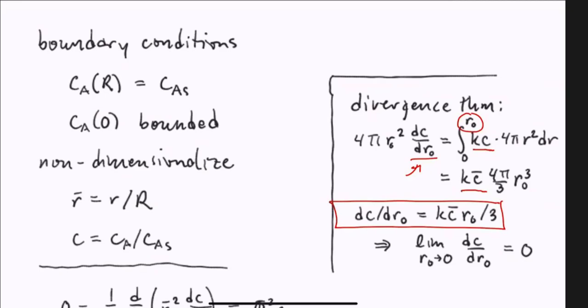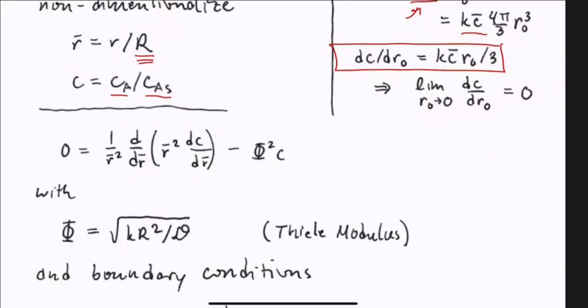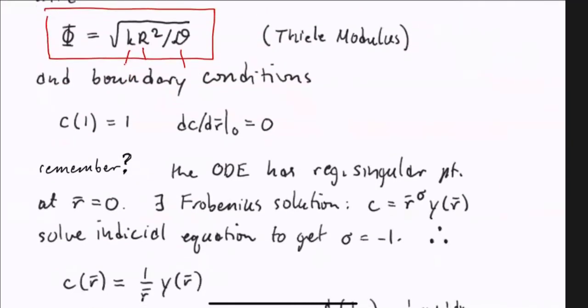Now we're going to non-dimensionalize these equations. R̄ equals the actual radius R divided by the radius of the pellet. We're also going to non-dimensionalize the concentration as CA divided by the surface concentration. After changing variables, we find a single dimensionless parameter called the Thiele modulus. Instead of having a rate constant and diffusivity, we just have the squared Thiele modulus. If you reverse engineer where that came from, it's K times R² over D. This lumps in all the geometry effects, intrinsic kinetics, and effective diffusivity into one dimensionless parameter. My boundary conditions become concentration at location one equals one, and my derivative in the center is zero.